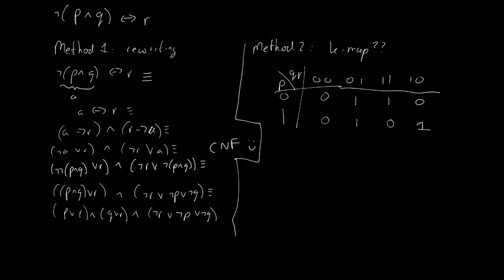And having done that, rather than taking a look at the ones in the truth table, we take a look at the zeros in the truth table. And we pretend those are the things that we want to make a sum of products for.